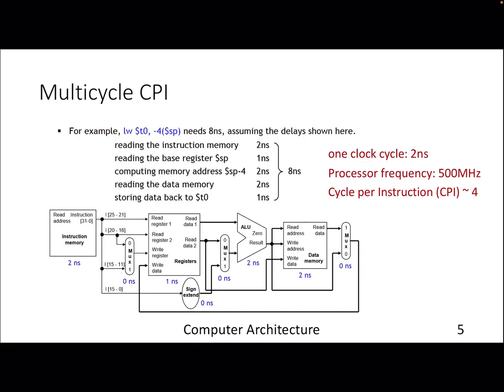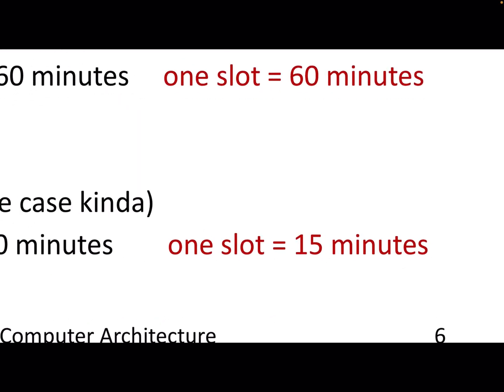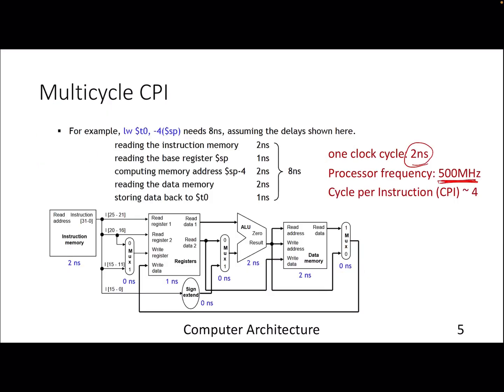So with multi-cycle, what happens to our CPI or IPC? The example I was giving: if you have a clock cycle of two nanoseconds, that gives you a processor frequency of 500 megahertz. Previously, if you remember, we had eight nanosecond clock cycle.